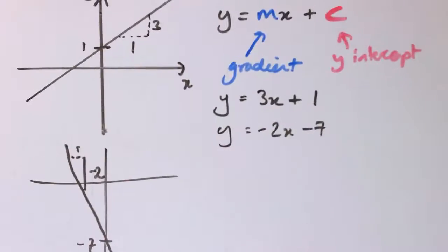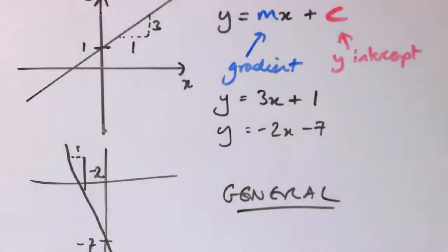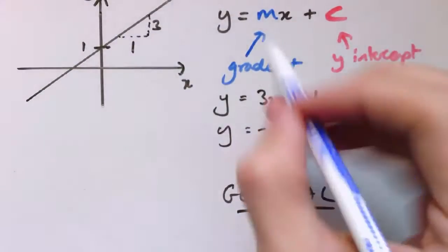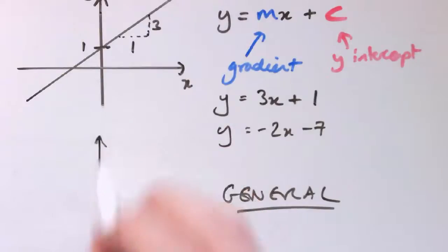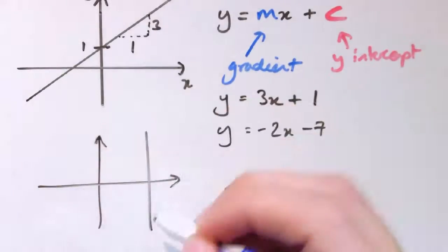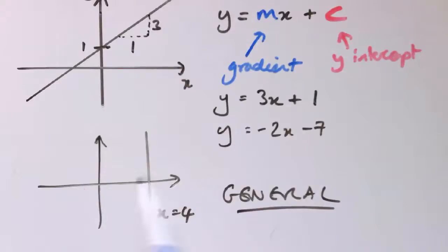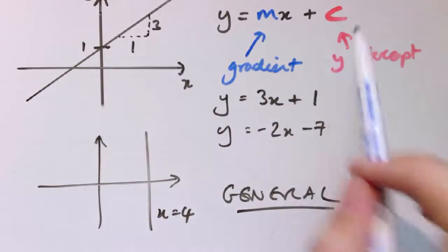People sometimes call y equals mx plus c a general form of a straight line, meaning all straight lines could be put into that form — and that's almost true. But being a good mathematician, I should note that not quite all lines fit this form. For example, x equals 4 doesn't have a y-intercept and doesn't have a well-defined gradient either. You might say it's infinite, but that's not very precise, so this isn't quite a general form.